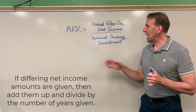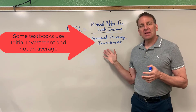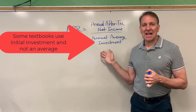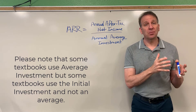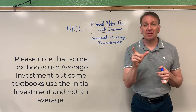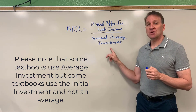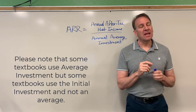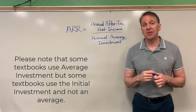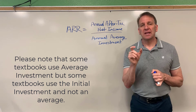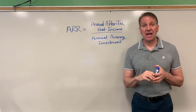Now let's take a look at the annual average investment. Most textbooks will either just give you that number, or if they don't, and you know the initial investment and the salvage value and you're using straight-line depreciation, you can take the beginning balance minus the salvage value divided by two to get the annual average investment. If you're using a double declining balance or declining balance method, you need to get the book value at the end of each year, add those together, and divide by the number of years.